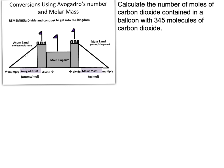In this next problem, we're once again going to be looking at the left-hand side of our mole kingdom flow diagram. But in this situation, we've been given a different given. They want us to calculate the number of moles of carbon dioxide contained in a balloon with 345 molecules of carbon dioxide. So we have 345 molecules and we want to know how many moles those 345 molecules comprise. Our given is molecules, so we're starting in atom land and solving for moles. We're going to go from atom land into the mole kingdom, so we're going to be using Avogadro's number: 6.022 times 10 to the 23rd.